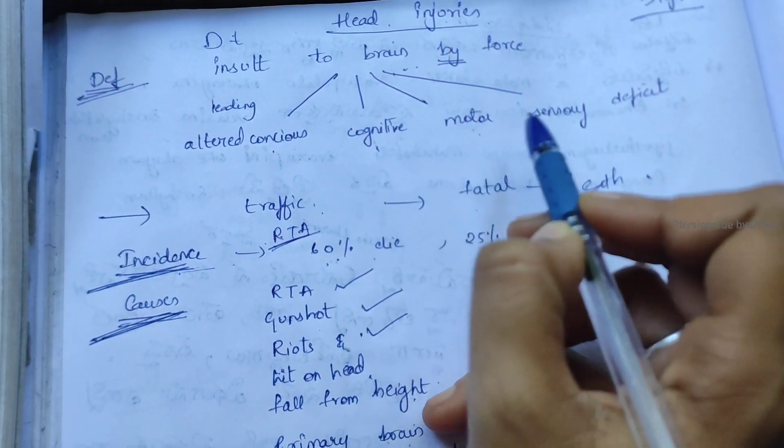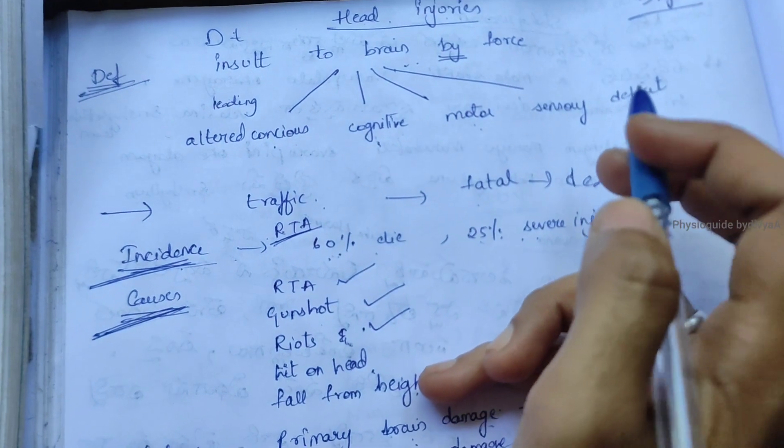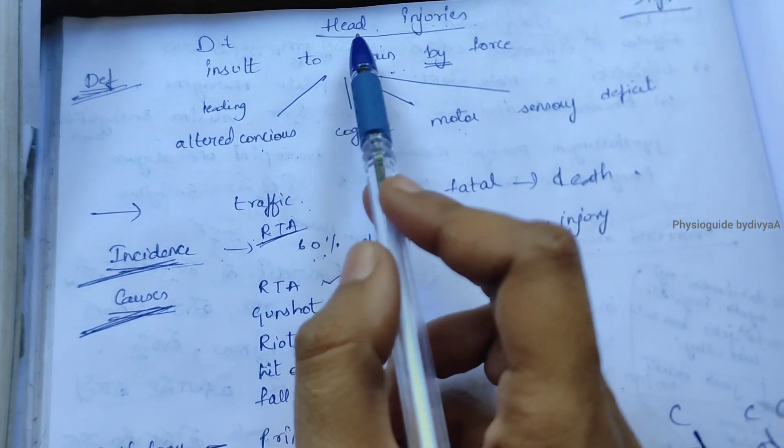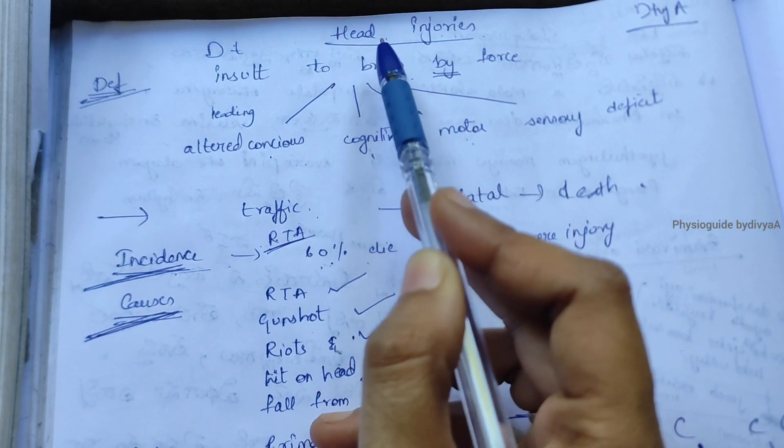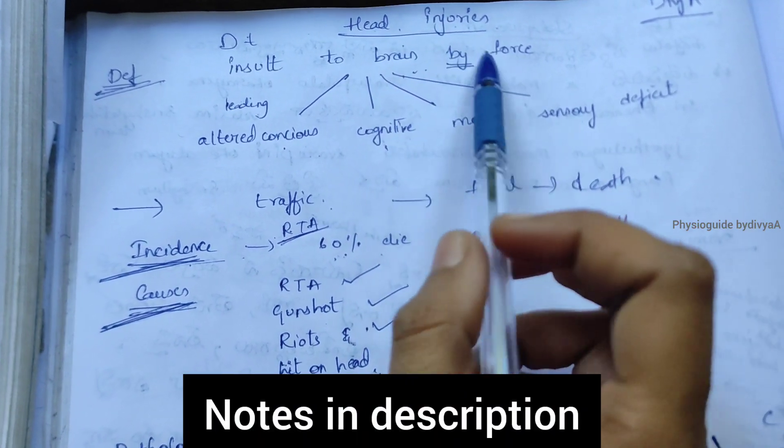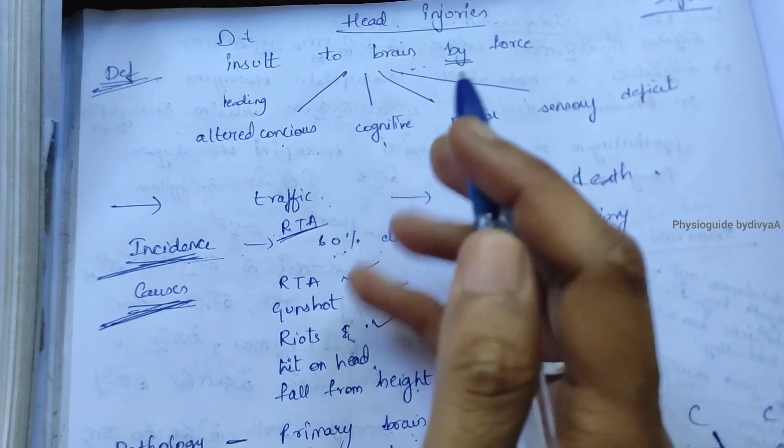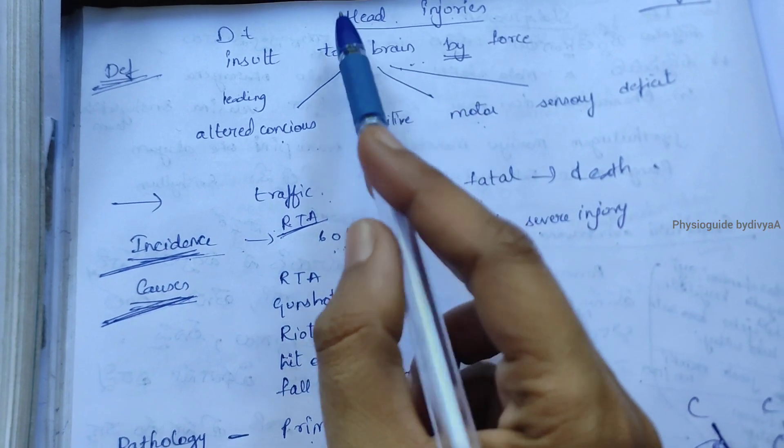Motor and sensory deficits are seen. Head injuries are commonly known as traumatic brain injuries. These have increased in recent days due to increase in traffic, and most cases result in death.